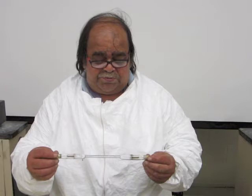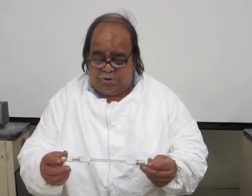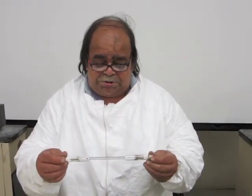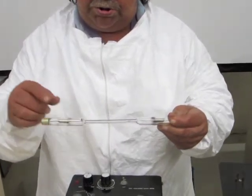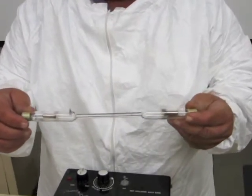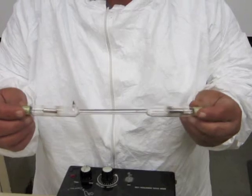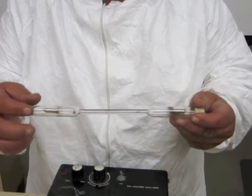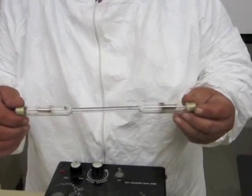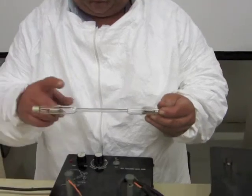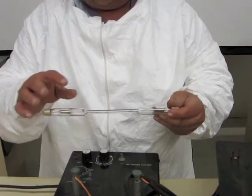Now I have here a similar tube that has two electrodes, one on each end, and the tube is evacuated, meaning that they have sucked out most of the air and then they have introduced a small amount of a different gas. In this case, helium gas was introduced into this tube.